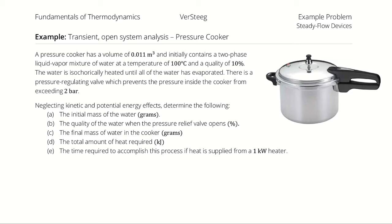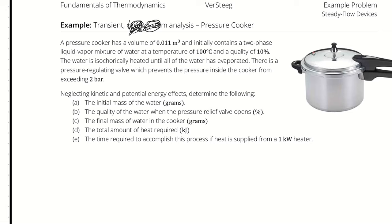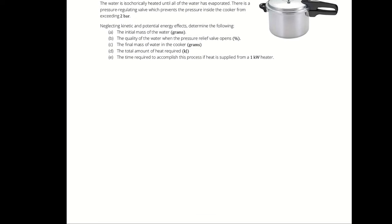This is a transient problem. We're describing the properties of the water in the pressure cooker at different points in time. The real question is whether we should treat it as a closed system or not. One of two things will happen: either the pressure relief valve will open, allowing some amount of steam to escape in order to keep the pressure from exceeding 2 bar, or it won't.